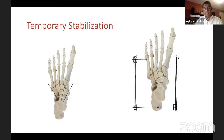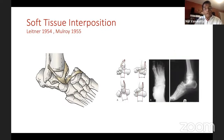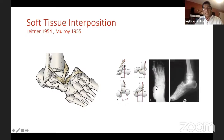You may not always be able to reduce these in casualty in a closed manner because of soft tissue interposition. This has been identified in literature a very long time ago — you can have retinacular tissue trapped between the Chopard joint bones, or the tibialis posterior tendon trapped between the bones. Looking at this X-ray, that's a classical case where the tibialis posterior tendon is trapped, preventing reduction of the talonavicular joint.